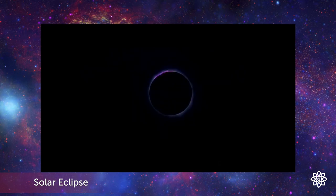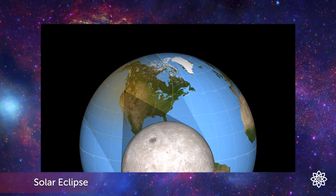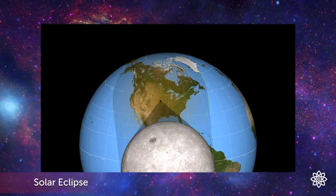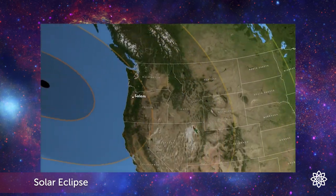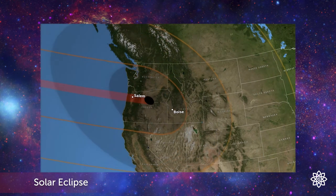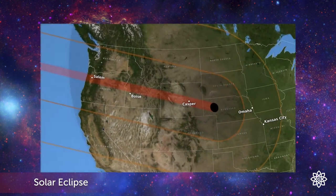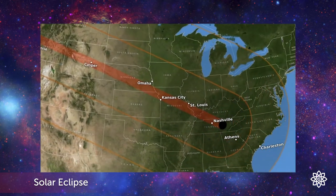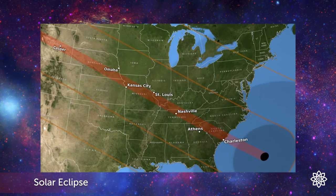A solar eclipse is a rare event that not many get to see because the moon's shadow is relatively small. This limits the locations on Earth that get to see it. You have to be on the sunny side of the planet and in the path of the moon's shadow. If you find your area in the path of totality one year, you've hit the jackpot, because on average that same spot on Earth will only see a solar eclipse every 375 years.